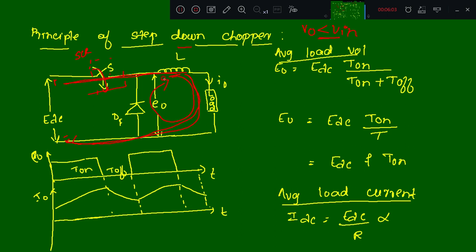When the switch is open, the energy stored in the inductor is released through the freewheeling diode DF. The path is: EDC, load, diode. So during T-on, the inductor stores the energy. During T-off, when the switch is open, the stored energy is released through the freewheeling diode. This cycle repeats.